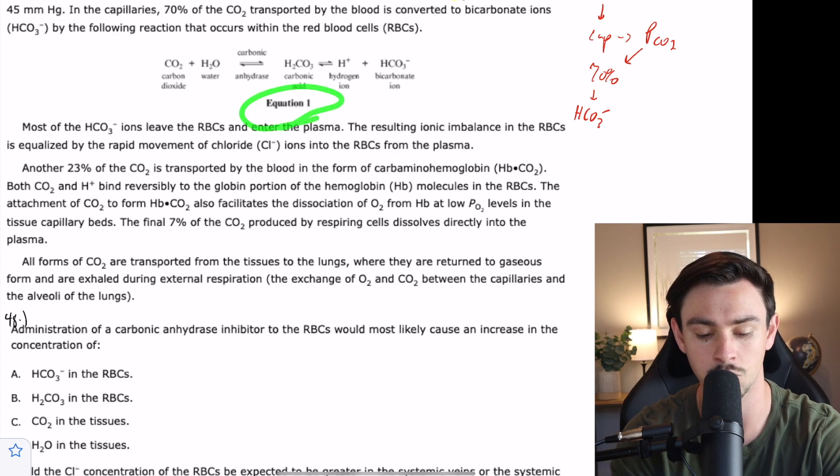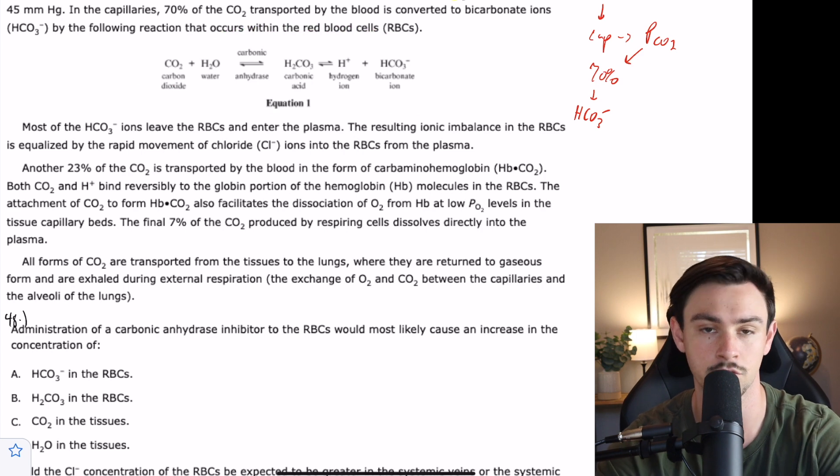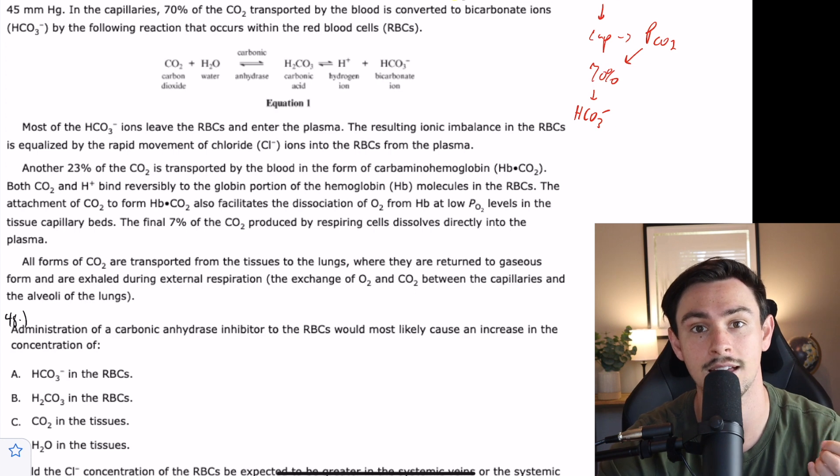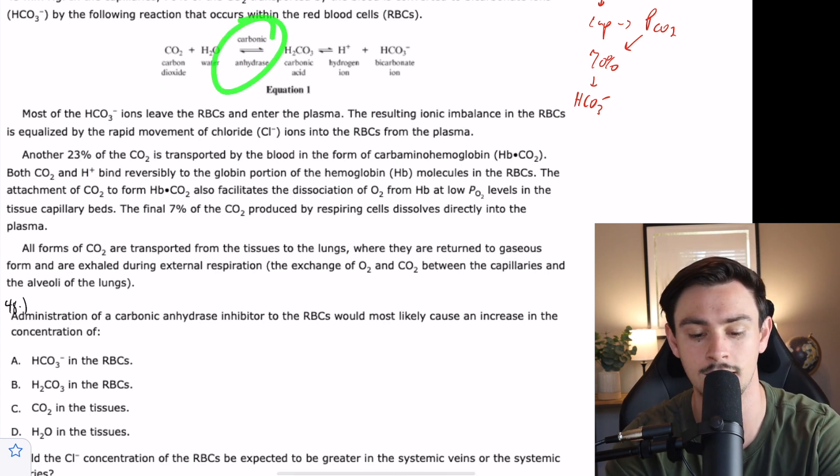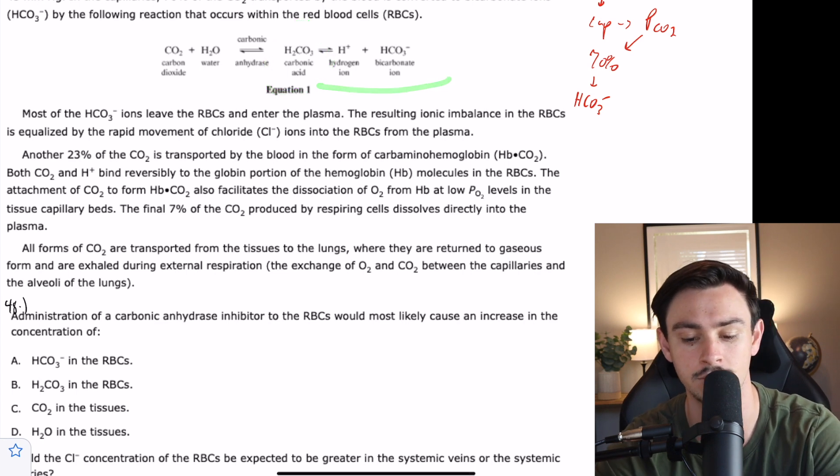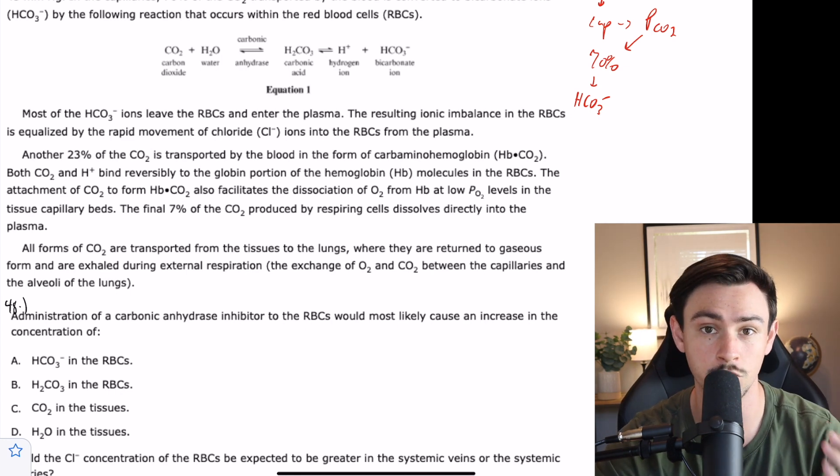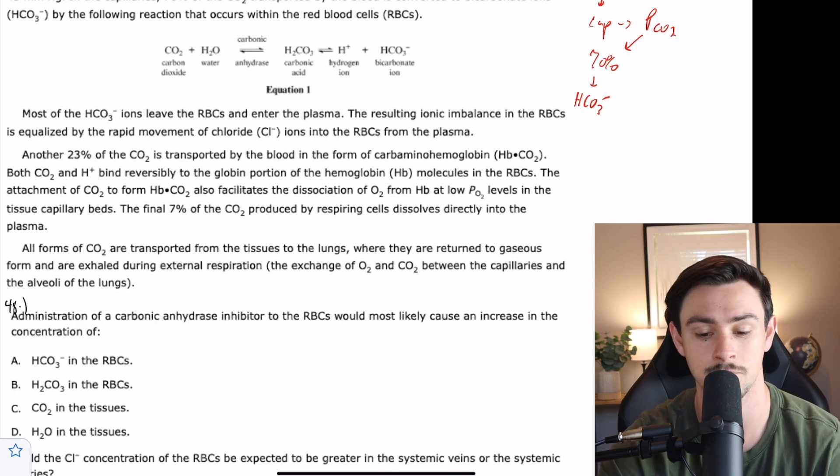Here looking at equation 1, it looks like this is just talking about the bicarbonate equation, the buffer system. This is something that's tested pretty frequently on the MCAT. We're starting with CO2 and water, using carbonic anhydrase as the enzyme. We've got this carbonic acid intermediate and hydrogen ions and bicarb as the products.